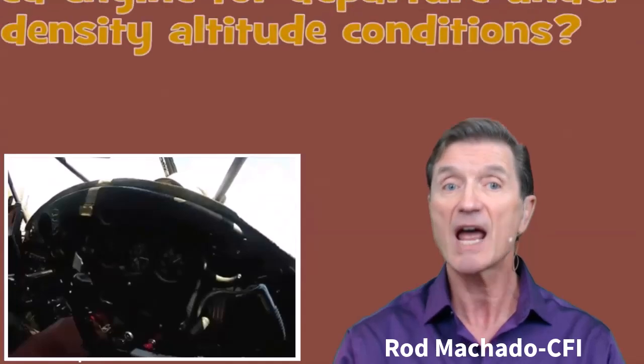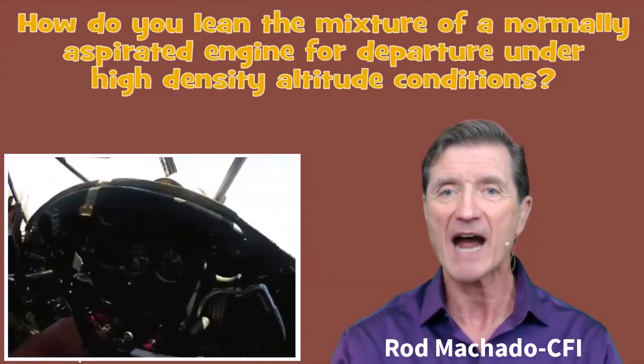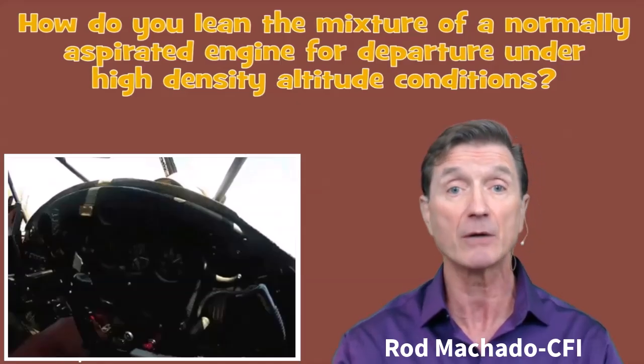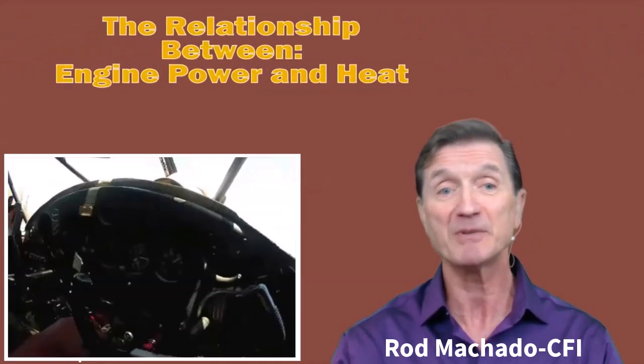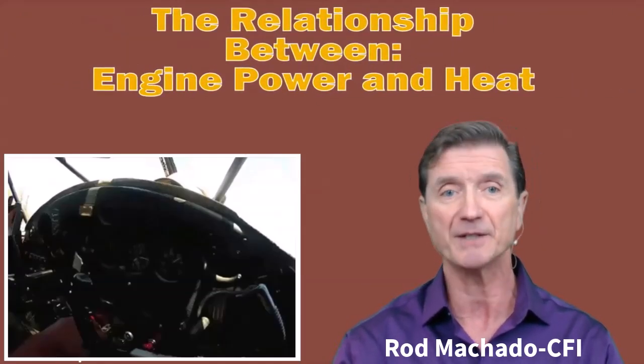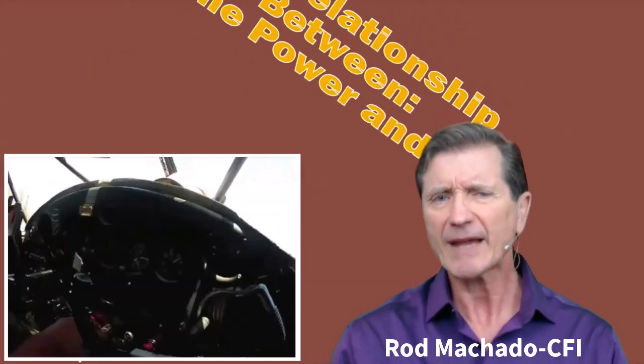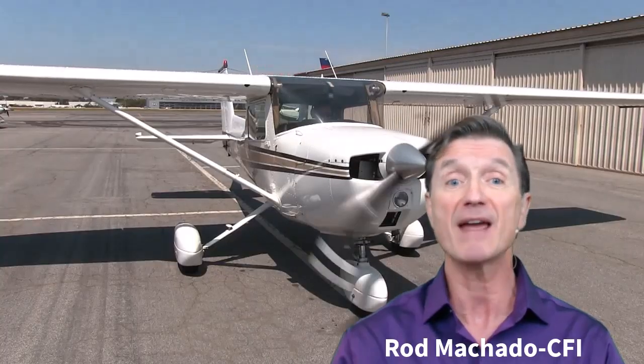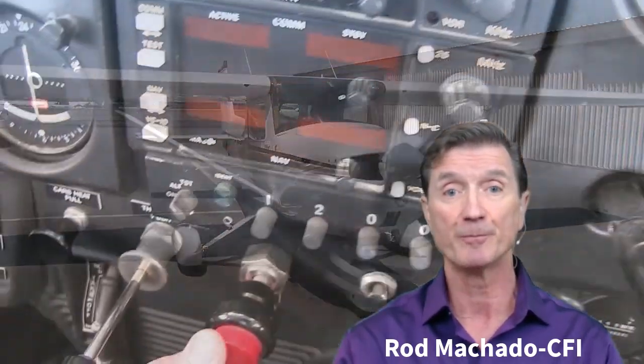The pilot not leaning the mixture resulted in the airplane's engine developing less than its maximum potential power for the conditions present at the time. So the question is, how should you lean a normally aspirated engine for departure under high density altitude conditions? To find out, we need to understand the relationship between engine power and heat. Airplane engines were designed to run at sea level under standard conditions without your having to do much of anything to the mixture control.